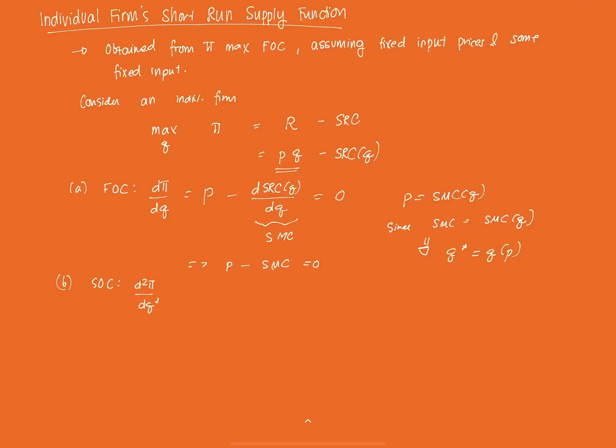So, if we get this one, there's no more, we're just gonna derive this one again with respect to Q. We're gonna derive, so derivative of P with respect to Q, there's no more there, so that's zero. So, minus, this one will be negative d squared SRC / dQ squared.